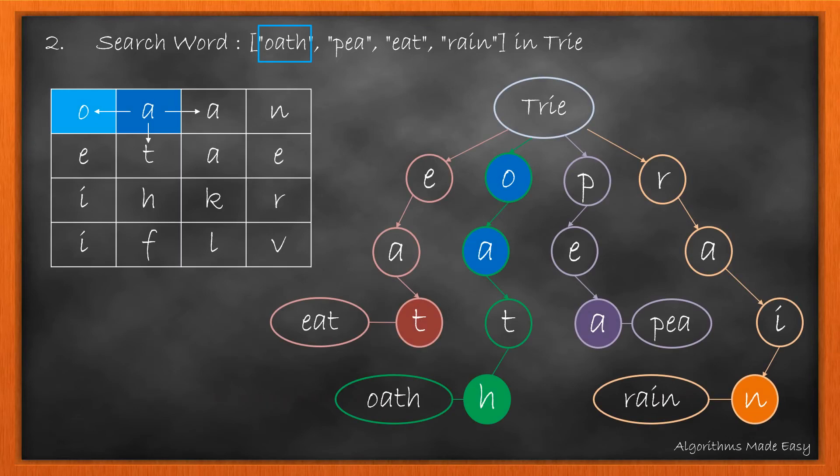For our example, we can see that we have a connection to A in the Trie. So we move in this direction and find if any of its adjacent elements are present in the Trie.